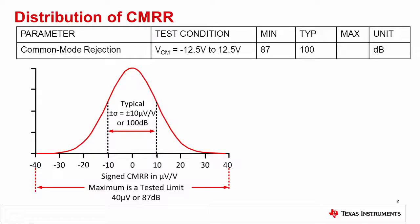The typical value of the CMRR specification is set to the mean plus one standard deviation. In the example shown, the mean CMRR is 0, and one standard deviation is 10 microvolts per volt, so the typical CMRR is 10 microvolts per volt, or 100 dB.